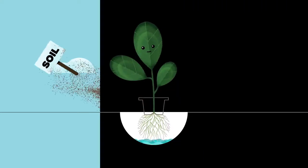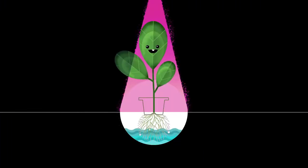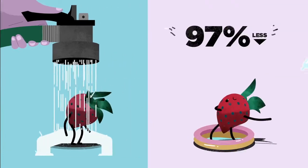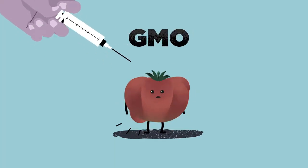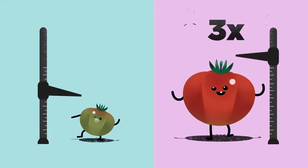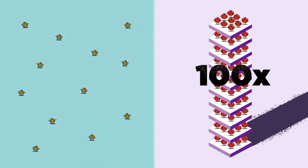Imagine a farm where there's no need for soil, that uses 97% less water, that has no need for pesticides or GMOs, that grows produce three times faster with yields 100 times larger on a smaller footprint.